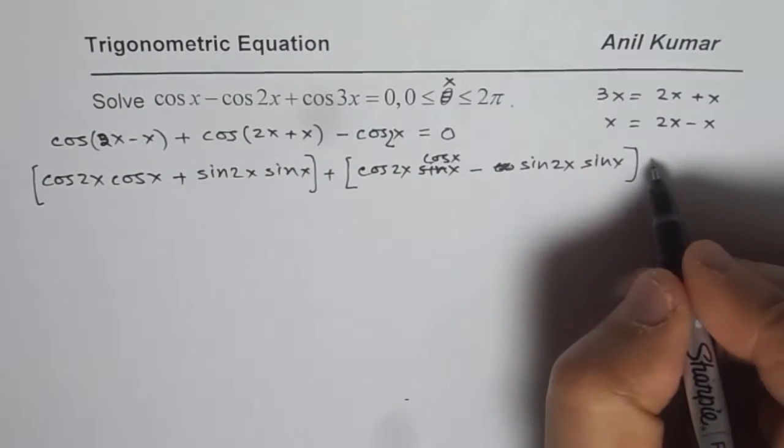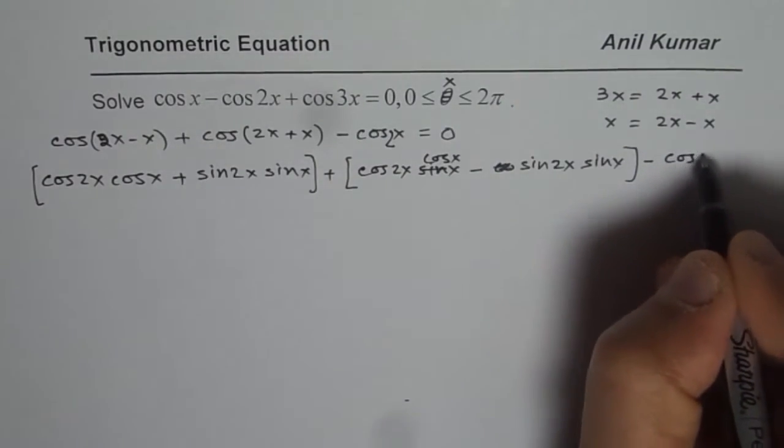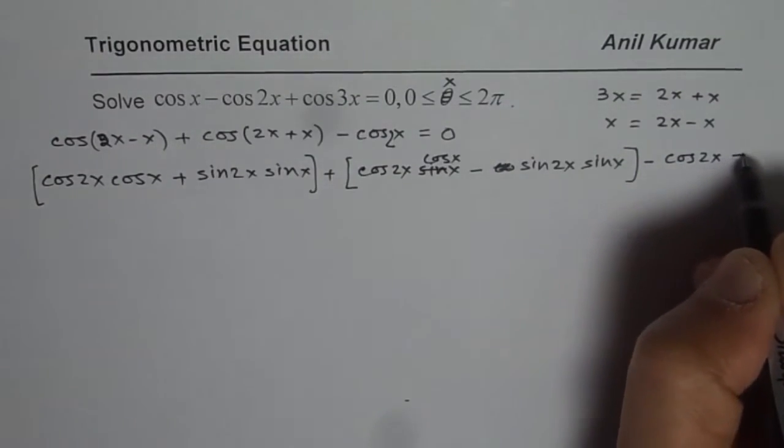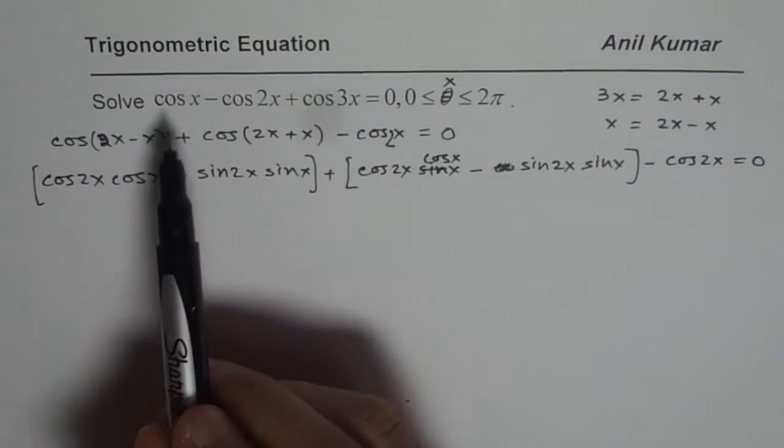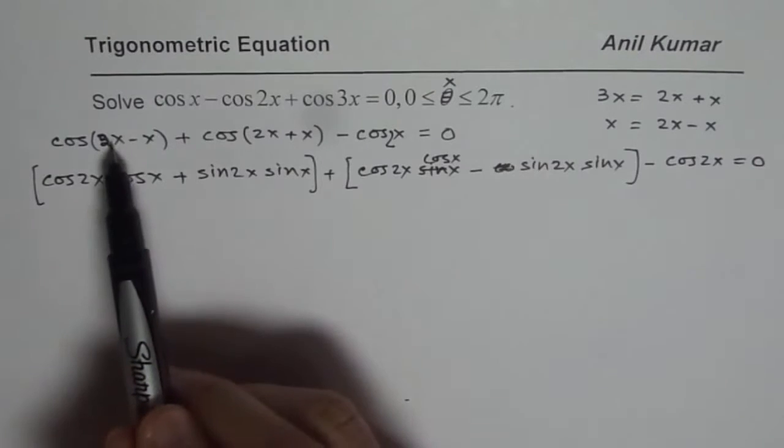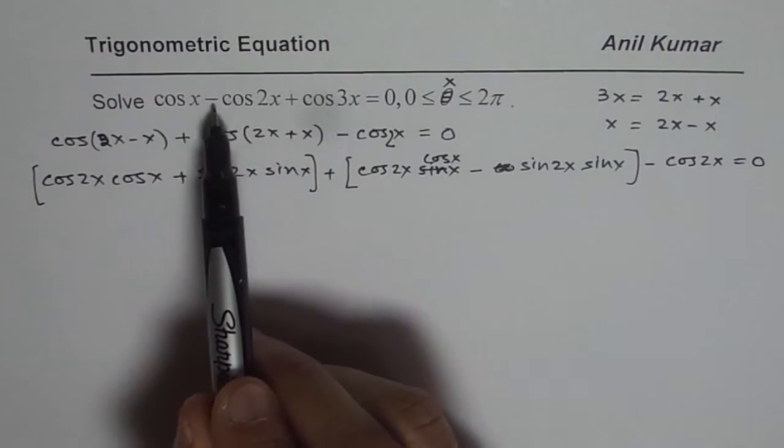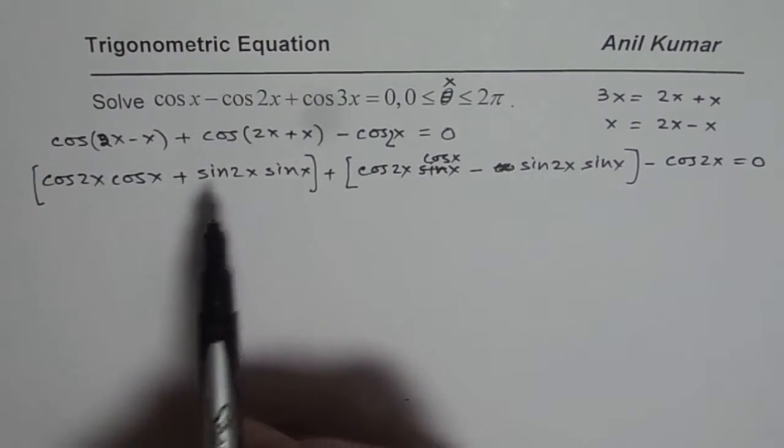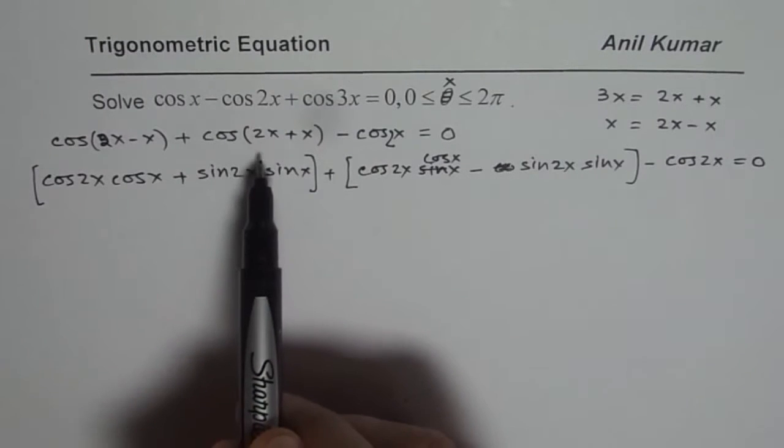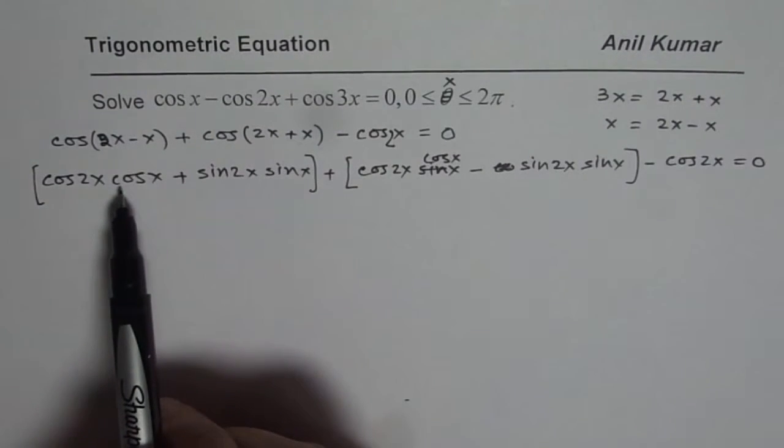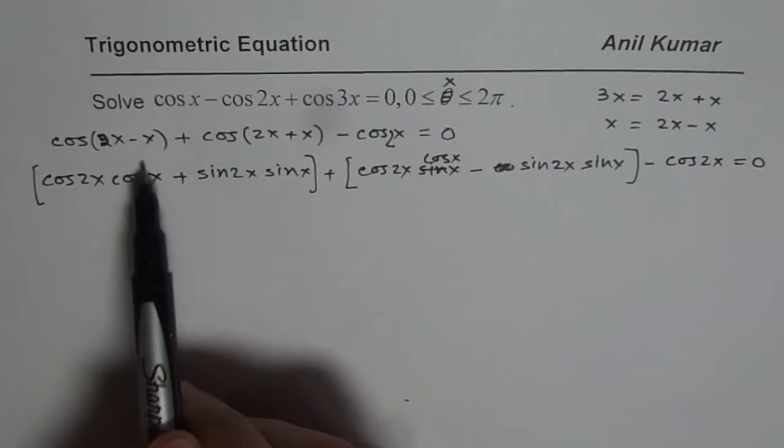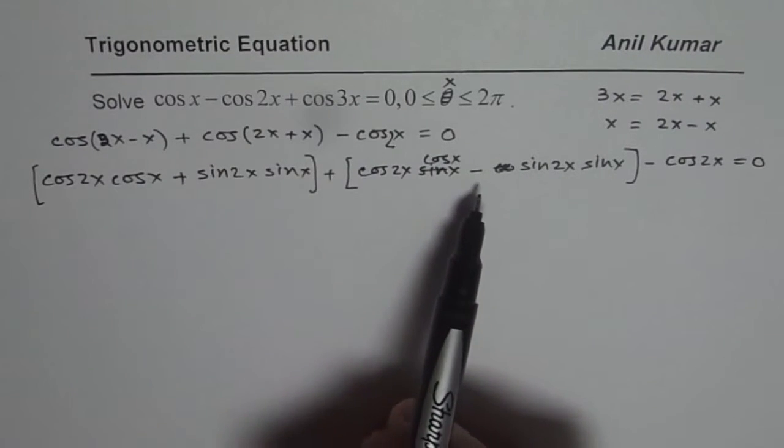We have minus cos 2x equals 0. What we did was, instead of cos x, we wrote this as cos(2x - x). Minus cos 2x we wrote separately. Cos 3x could be written as cos(2x + x). Then we applied the compound angle formula to expand.